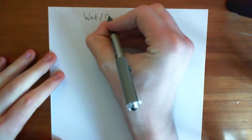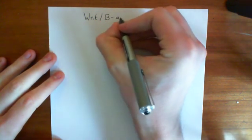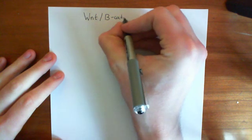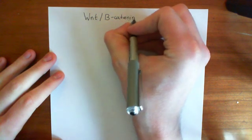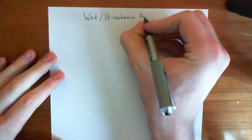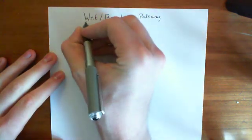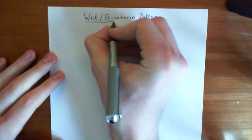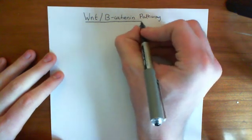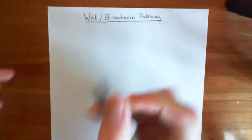Specifically, we're going to look at a form of hereditary cancer known as familial adenomatous polyposis. We'll look at the Wnt beta-catenin pathway, and then at the end, how it goes wrong in familial adenomatous polyposis.